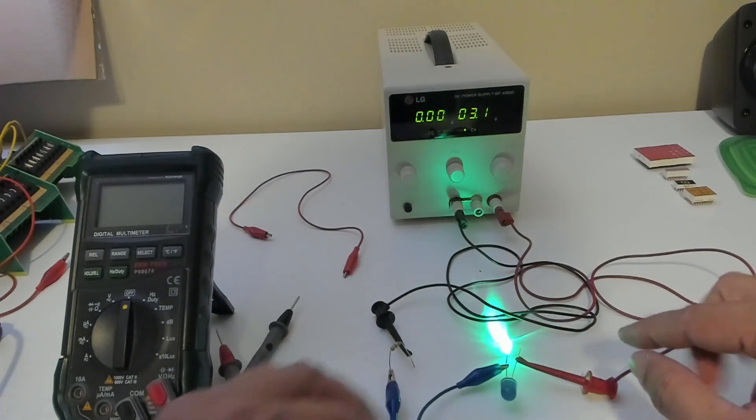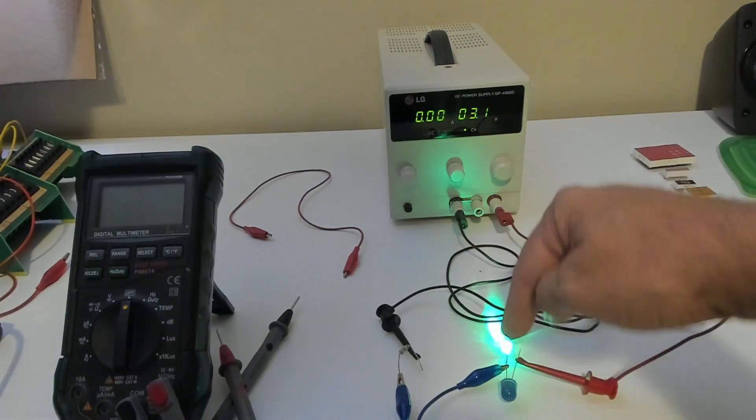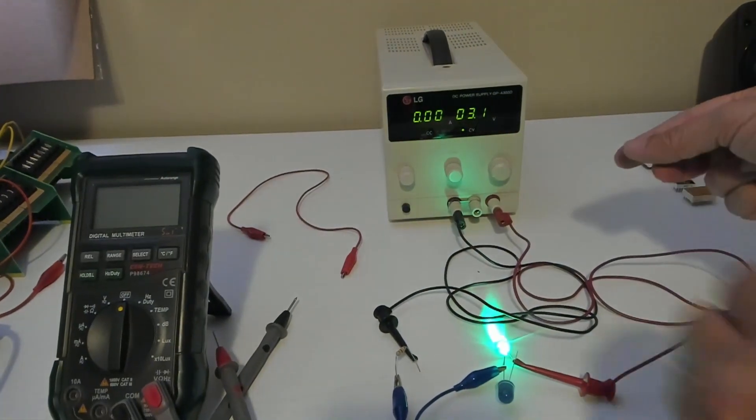Notice how only one of the lights glow, the one with the cathode connected to the negative.